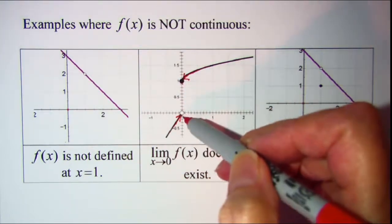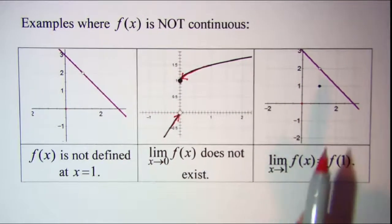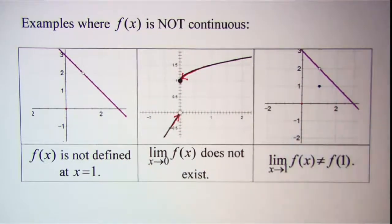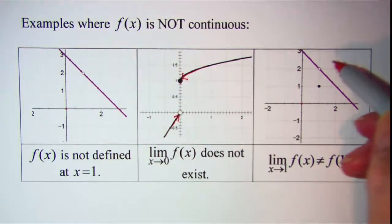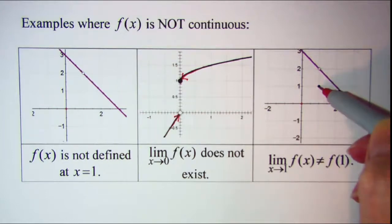These values need to be the same in order for the limit to exist. In this example the limit of f of x as x approaches 1 is not equal to f of 1.